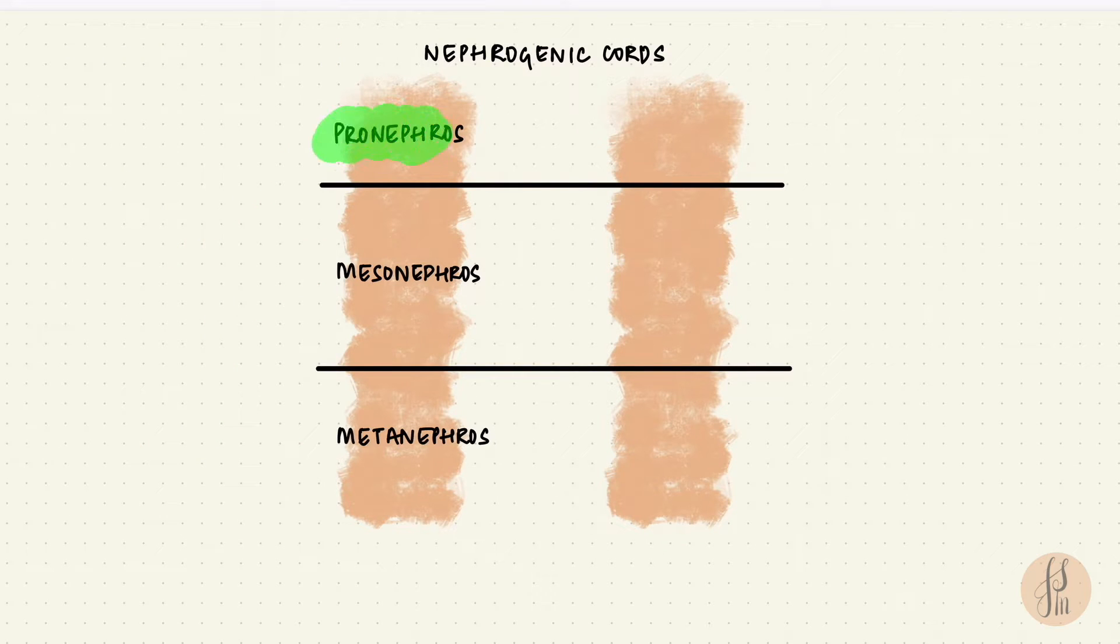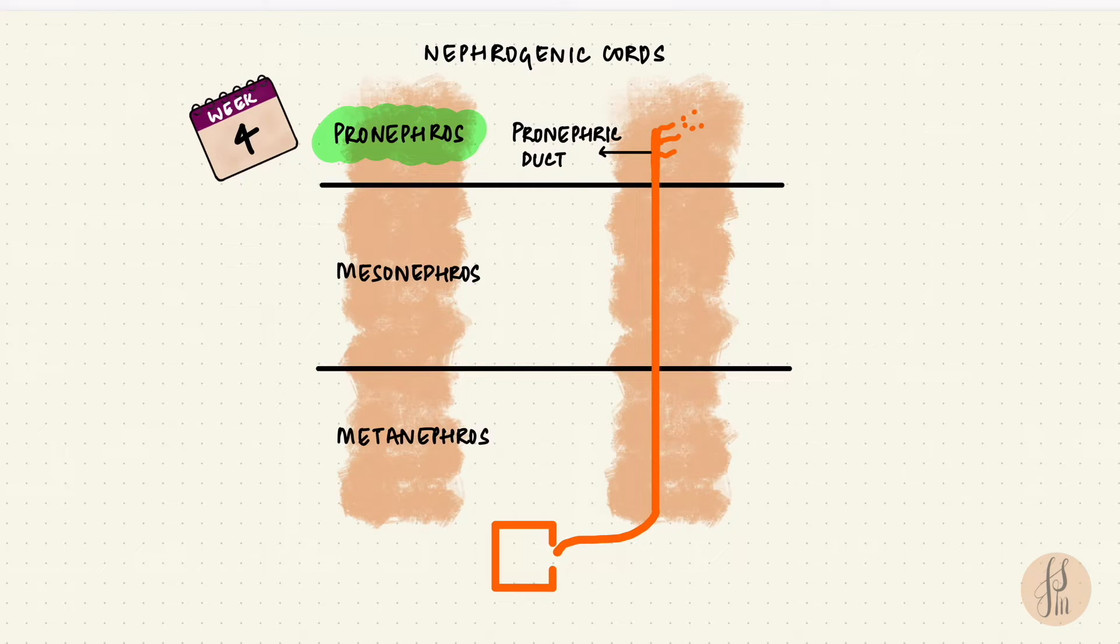The first stage is the pronephros. We're now at week four. The pronephros is very primitive, just some cell clusters and tubules and the pronephric duct. This duct opens into the cloaca, part of which is going to form the bladder. But for now, it's still the cloaca. So the pronephros can't function. It degenerates.